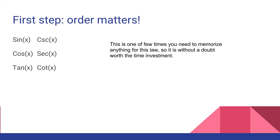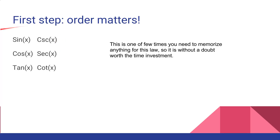The first step is just remembering this order: sine, cosecant, cosine, secant, tangent, cotangent. As long as you write it in this order, all the following parts are going to work. This is the special order you have to write it in — and you're probably already writing it this way since it's the typical order used in trig. If you get mixed up and write it in a different order, try to get back into this order. It's really useful.